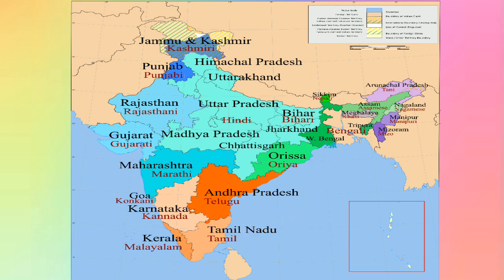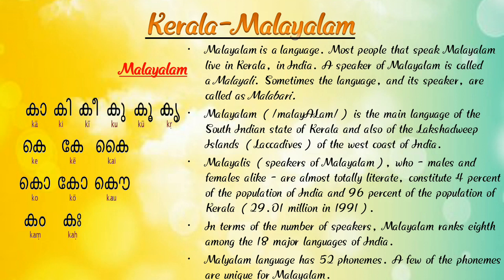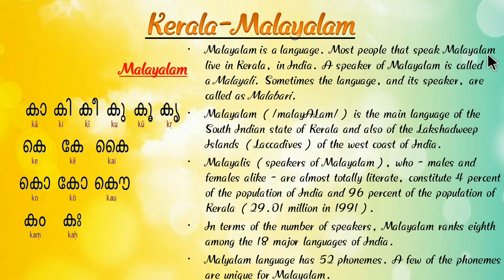Now we are going to learn in detail which languages are spoken in Indian states. First, Kerala — Malayalam. Here we can see a photograph of the Malayalam language alphabet. Malayalam is the language spoken by most people in Kerala.